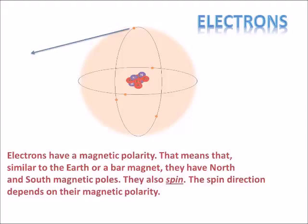If we look at one single electron, we notice it's spinning — in this case, in a counterclockwise direction. The north pole appears to be pointed up and the south pole pointed down. An up arrow represents this spin direction, telling you the electron is spinning counterclockwise with the north pole upward.